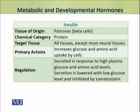We shall summarize them. First, insulin, which is produced by the beta cells of the pancreas. It is a protein hormone and it targets almost all tissues of the body except the neural tissues. Its primary action is to increase the uptake of glucose and amino acids by the cells.